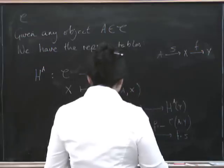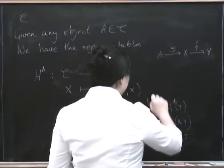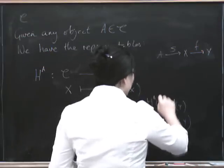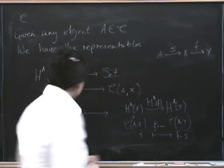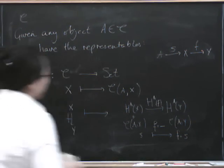You could write that as F composed with blank, and it's the functor H upper A applied to the morphism F. So that's the other representable.